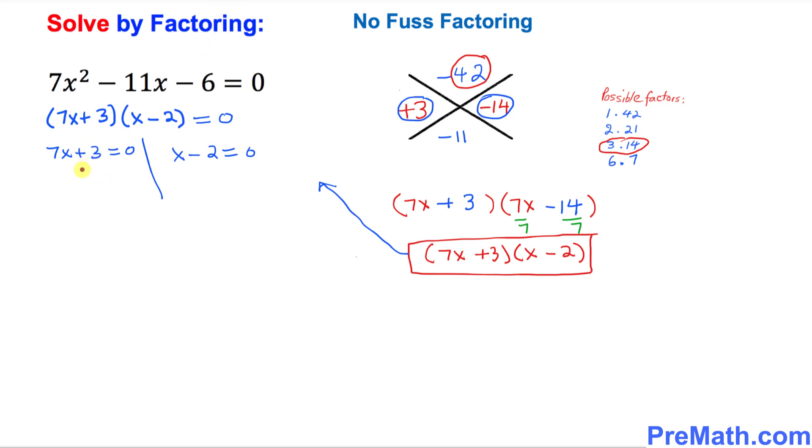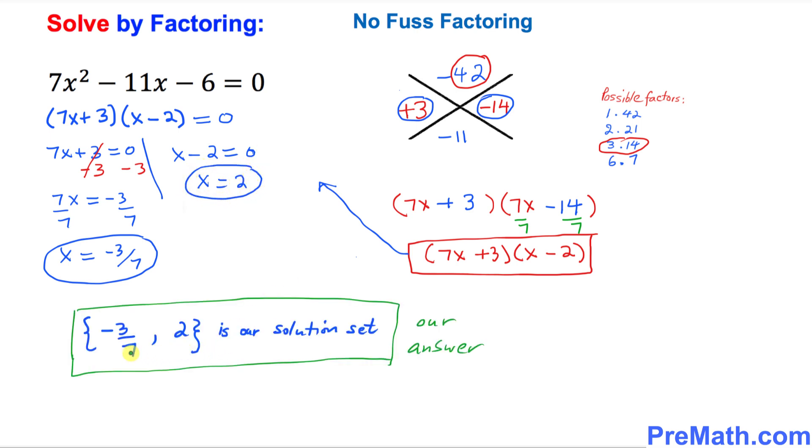Here I want you to isolate x. The best thing is just simply subtract 3. This reduces to 0. We just simply got 7x equal to negative 3. You divide both sides by 7. So x turns out to be negative 3 over 7. This is one of your solutions. And on this side we have x minus 2 equal to 0. So that means x equal to 2 is another solution. Thus our solution set turns out to be negative 3 over 7 and x equal to 2. And this is our answer.